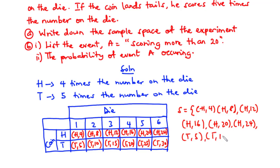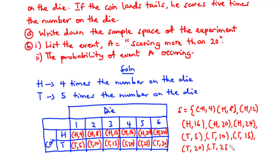The sample space includes: heads 4, heads 8, heads 12, heads 16, heads 20, heads 24, tails 5, tails 10, tails 15, tails 20, tails 25, and tails 30. This is the sample space for this experiment.